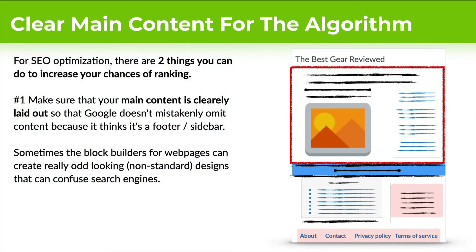When it comes to main content, the first thing you need to know — and there are two main things — is that you need to make sure it's clearly laid out, not just for humans but for robots, especially the Google robot and the Google algorithm. You don't want it to mistakenly omit content because it thinks it's a footer, a sidebar, or an advertisement. Sometimes non-standard design or block editors can actually confuse search engines.